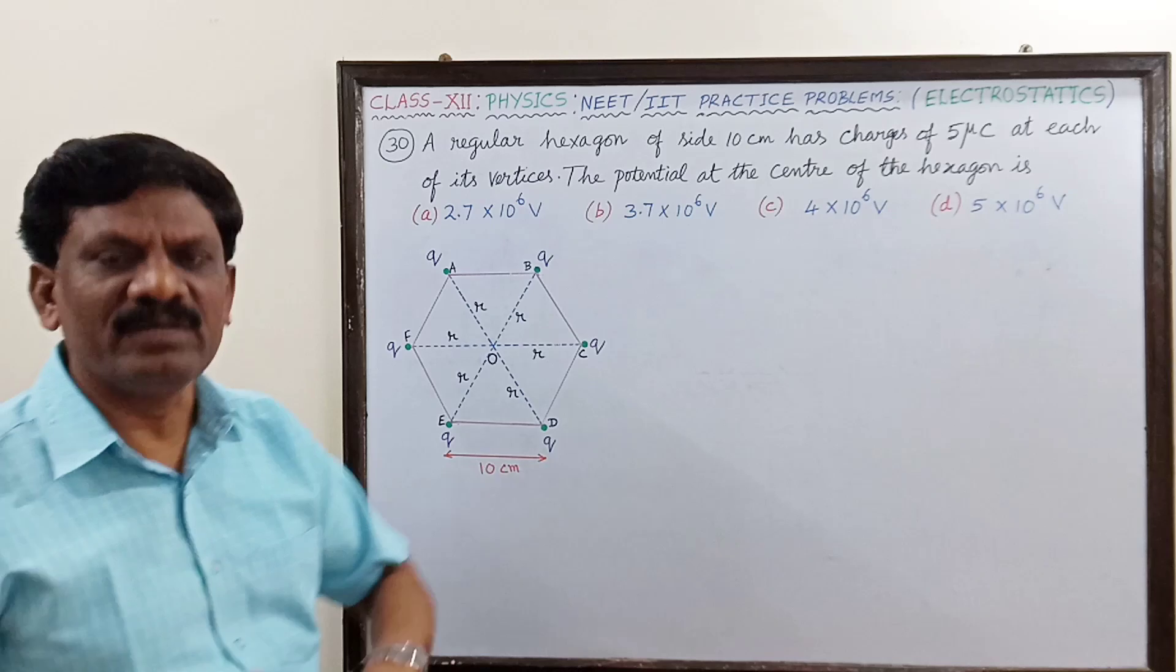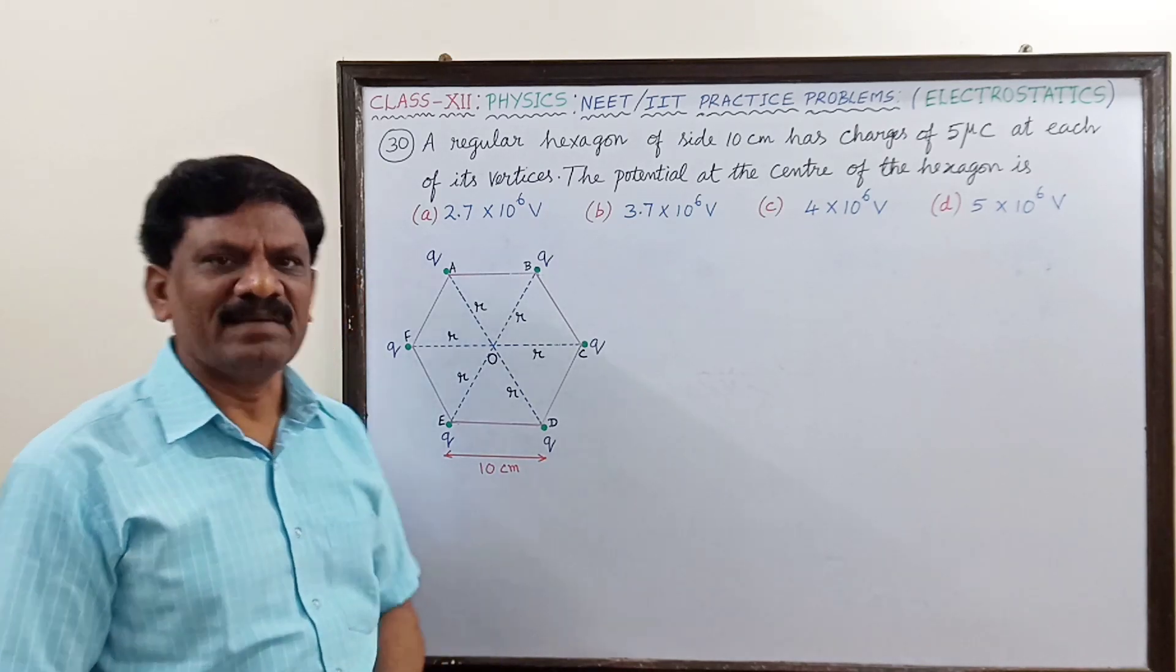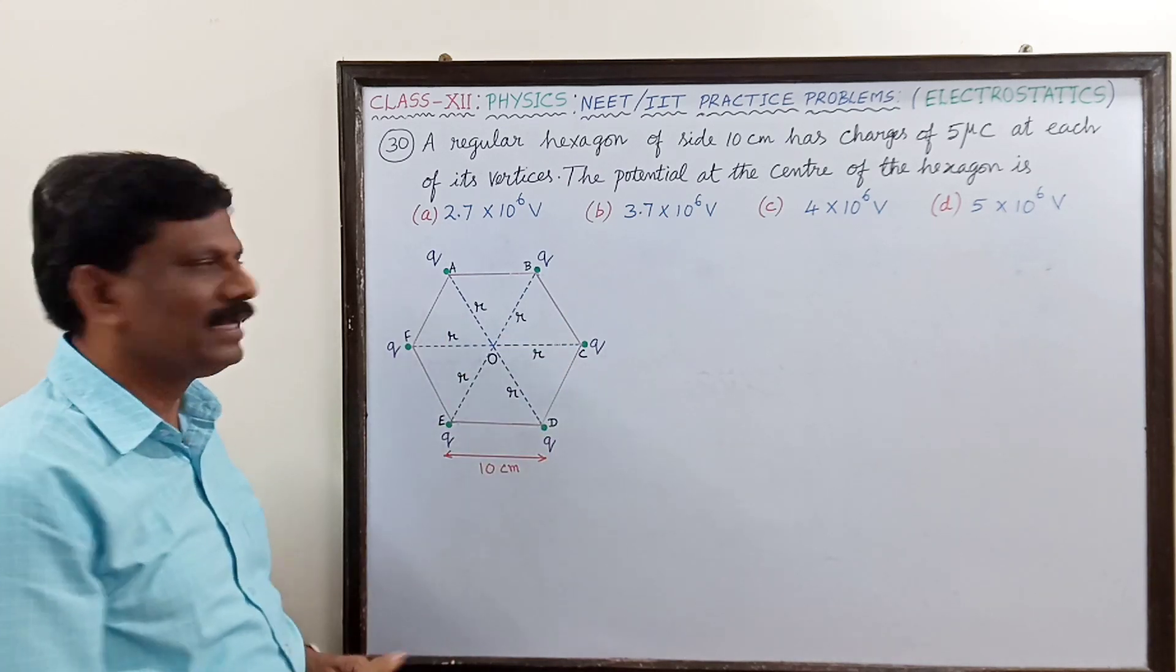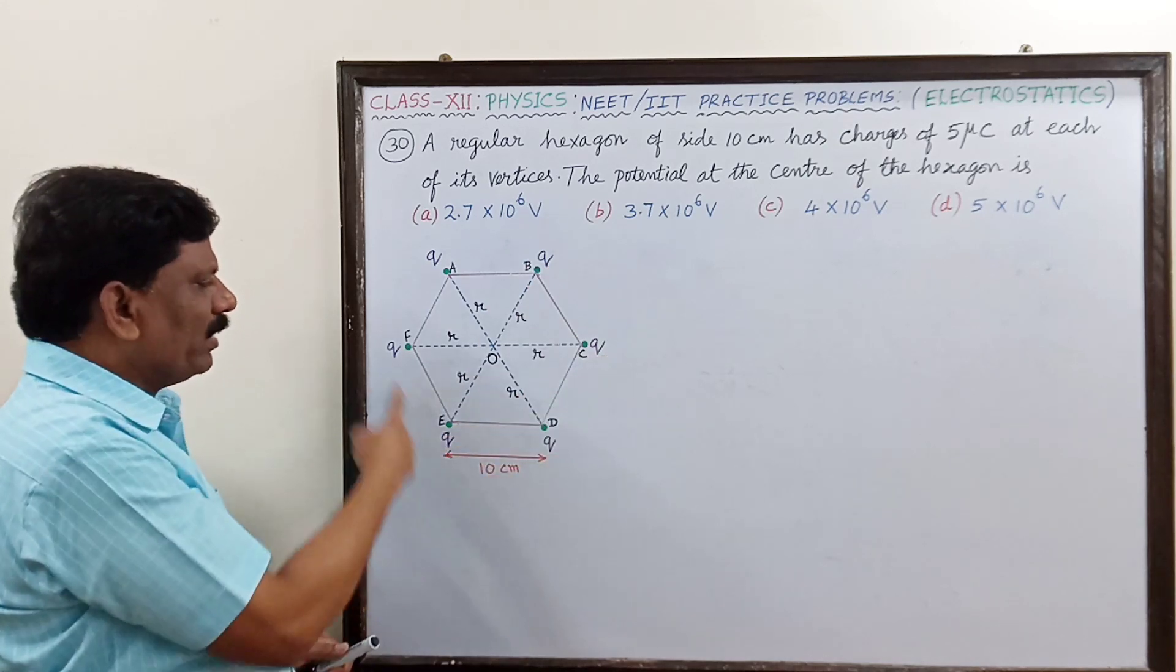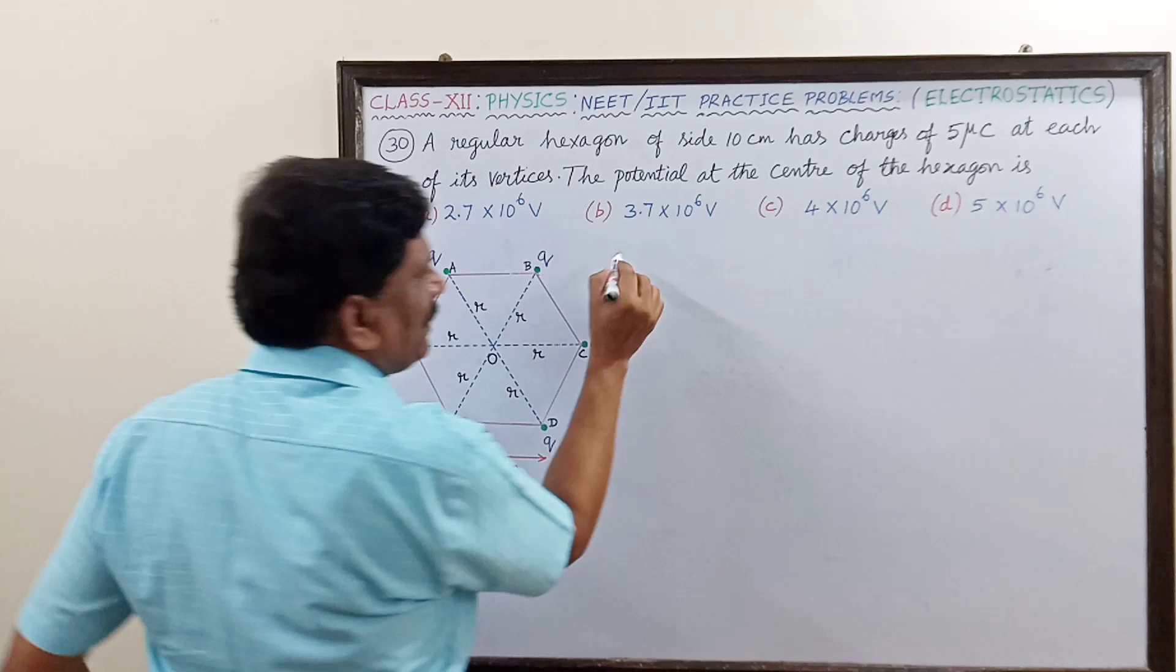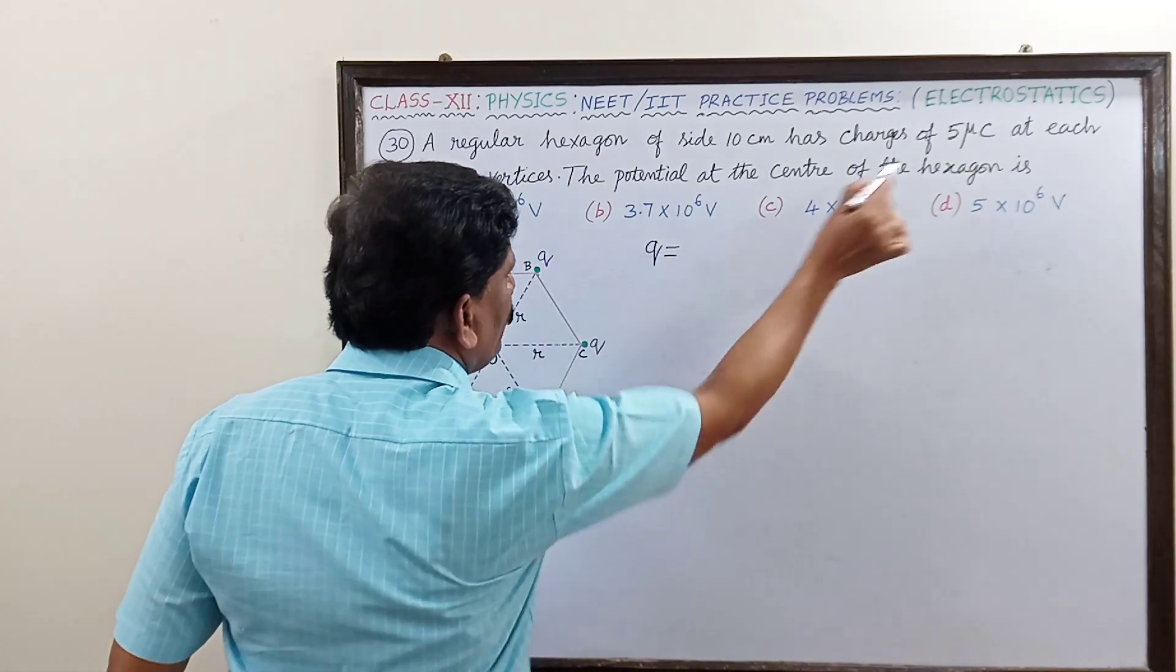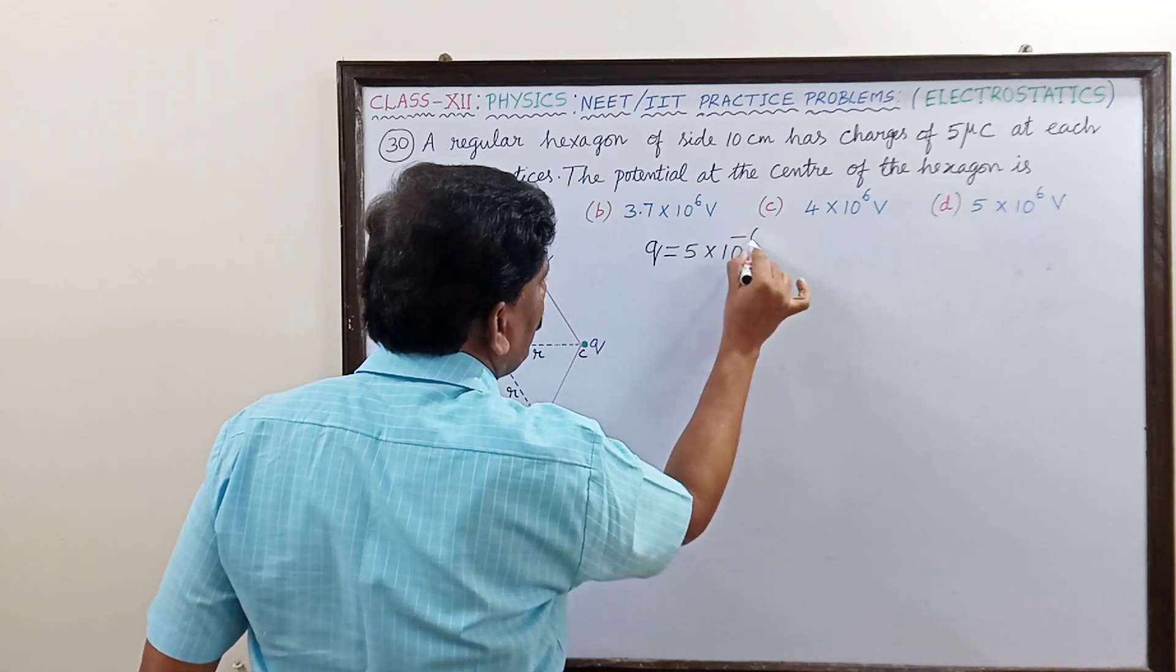Now you can look at the hexagon. There are six vertices and the same quantity of charge is located at every vertex. So here the charge Q is equal to 5 micro coulomb, so this is 5 into 10 to the power of minus 6 coulomb.